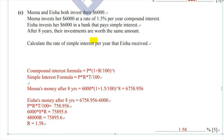So Meena invested at a rate of 1.5% compound interest and Isha at 1.58% simple interest. In the end, they had the same amount. End of question.